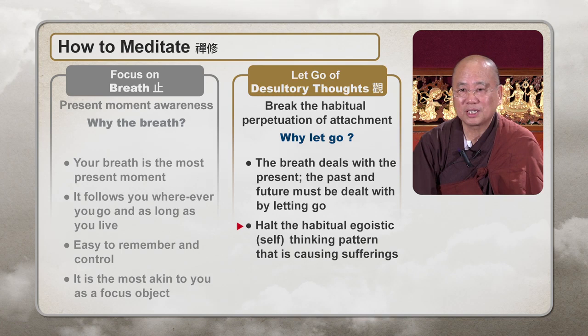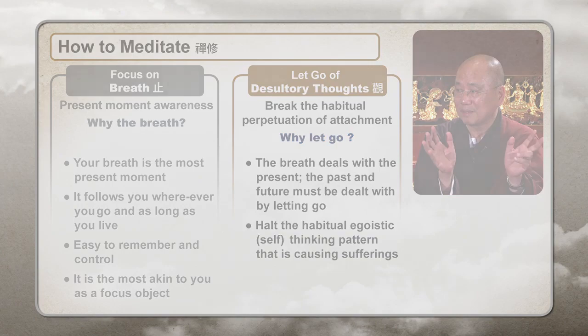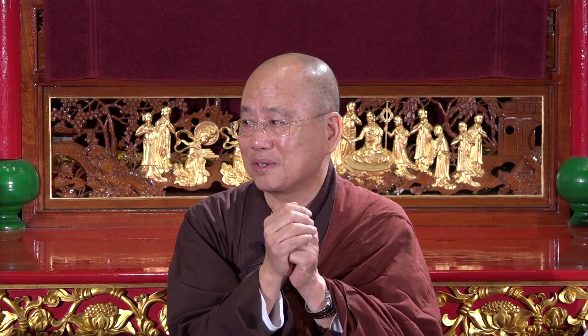Halt the habitual egoistic self-thinking pattern that is causing sufferings. The ego in us — we call it the manas. We have eight consciousnesses. The eye consciousness, ear consciousness, taste consciousness, touch consciousness, auditory consciousness, and the sixth which is the mano consciousness — the thinking consciousness. Then the seventh is the manas consciousness, which is the ego consciousness. We always attach the ego to our thinking — how does it benefit me? How do I differentiate myself from you?